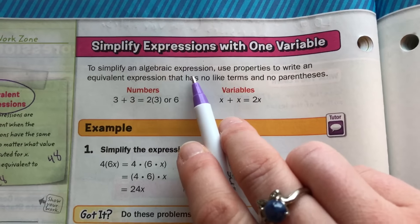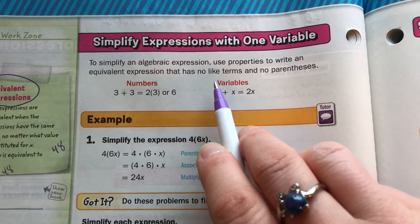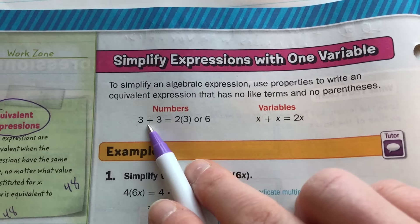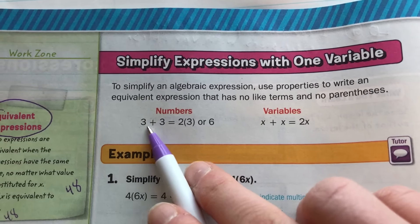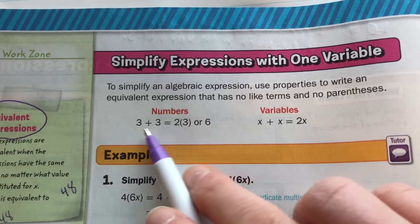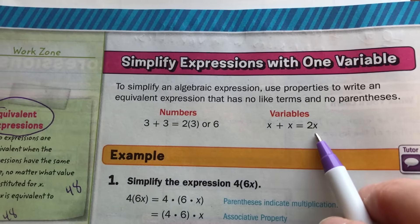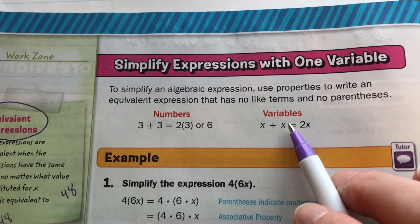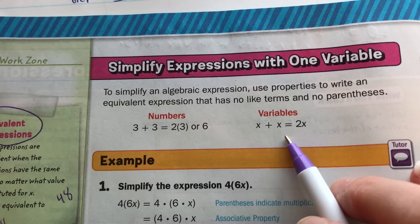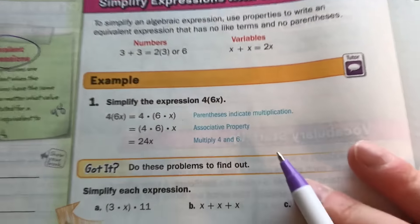To simplify an algebraic expression, use properties to write an equivalent expression that has no like terms and no parentheses. Look at these numbers: 3 + 3 = 2 × 3, or 3 + 3 = 6. Similarly, x + x = 2x. We're going to try to cut down on the number of terms by combining terms that we can.